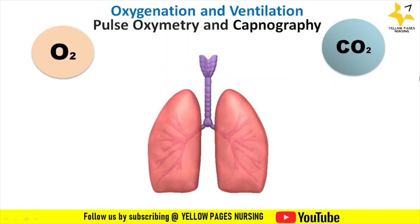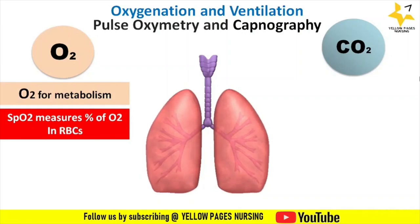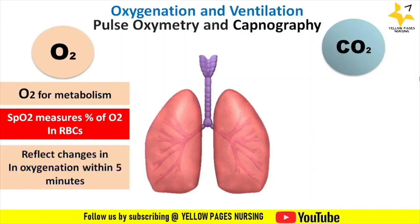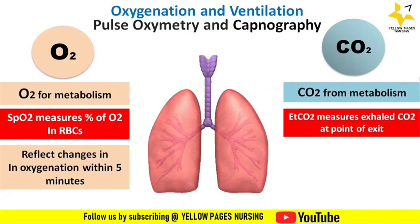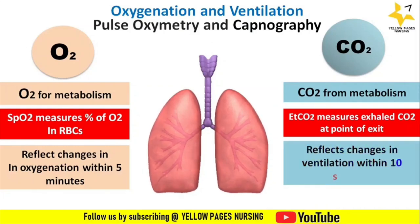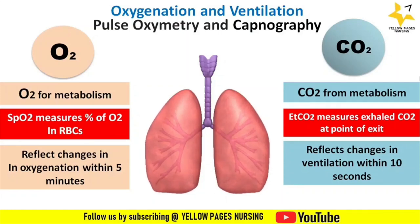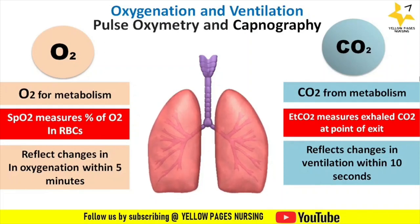Pulse oximetry versus capnography — oxygenation versus ventilation: oxygen is needed for metabolism; SpO2 measures percentage of oxygen in RBCs and reflects changes in oxygenation within five minutes. CO2 is the end product of metabolism; EtCO2 measures exhaled carbon dioxide at the point of exit and reflects changes in ventilation within 10 seconds. Capnography gives an immediate picture — for example, if you hold your breath, capnography immediately shows apnea whereas pulse oximetry oxygen saturations remain normal for a prolonged period.